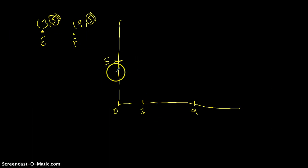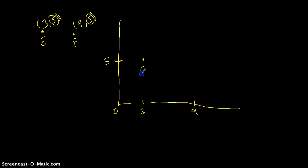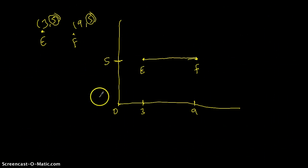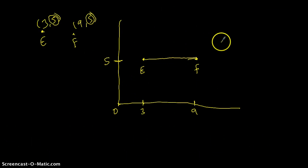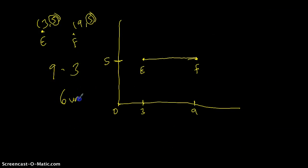This is not drawn to scale, but our line segment starts at 3 — where point E is — and goes to 9, where point F is. Notice that we are not passing into another quadrant; we stay entirely in the first quadrant. Since we stay in one quadrant, we do not add absolute values — instead, we subtract. 9 minus 3 gives us 6 units, so this line segment is 6 units long.